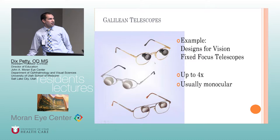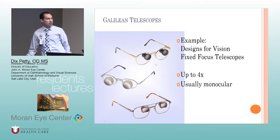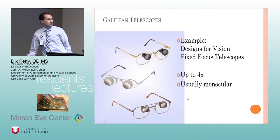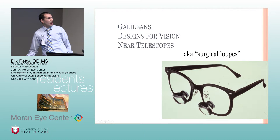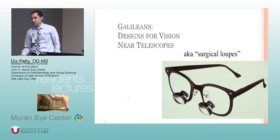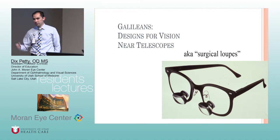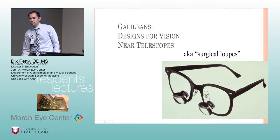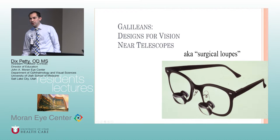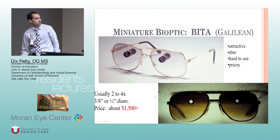Galilean bioptic telescopes go up to 4x and usually have just one lens on one side. They are also used as surgical loupes — dentists and surgeons use these. Since surgical loupes don't have reinverting optics, they are Galilean telescopes, typically small, 2 to 4x.